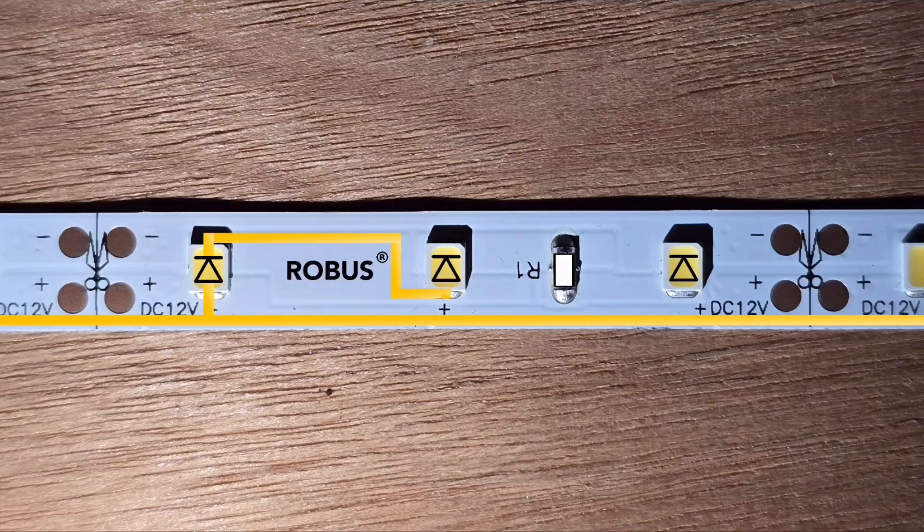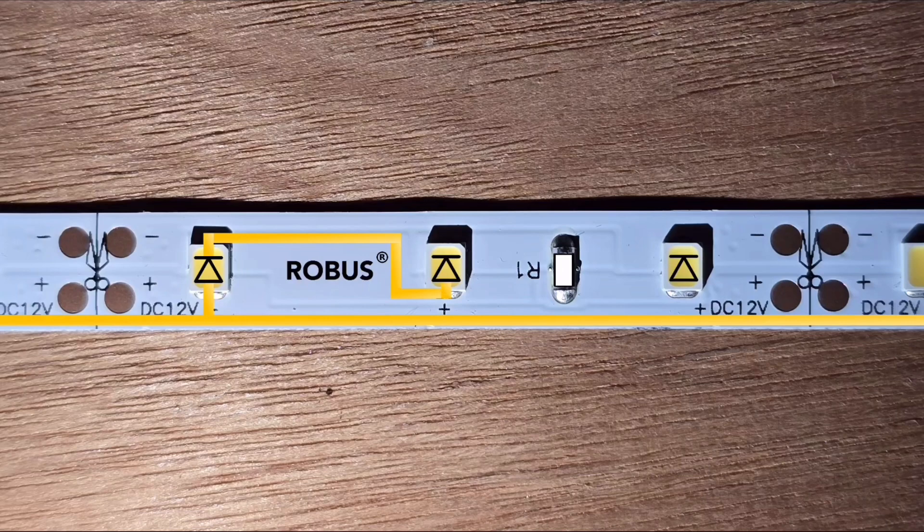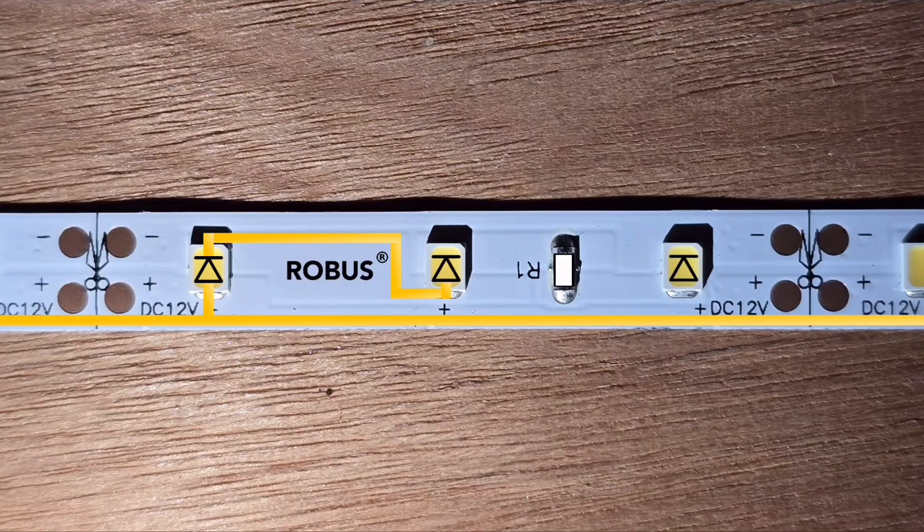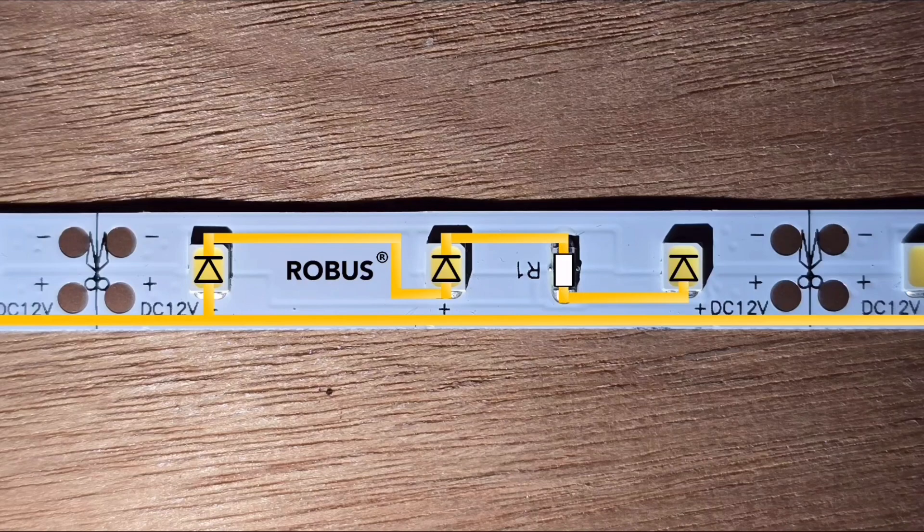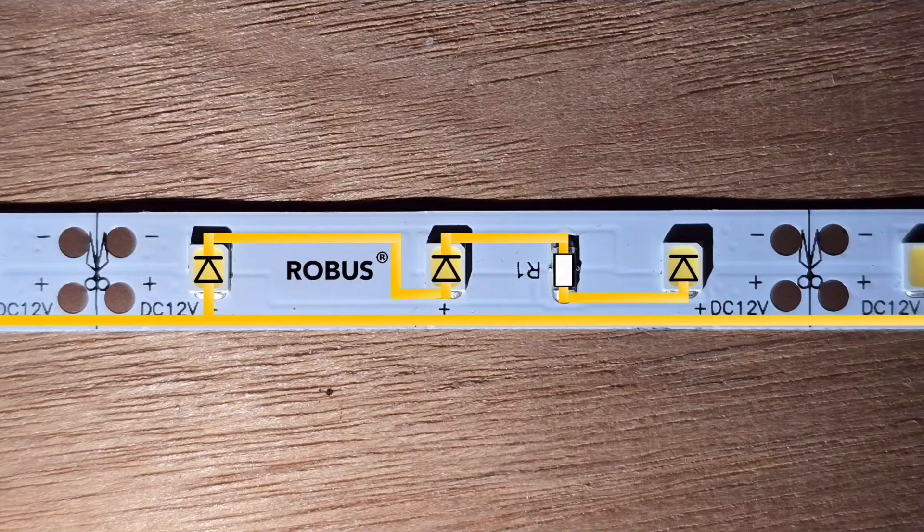Then the other side goes to a completely new piece of copper which connects to one side of the resistor. The other side of the resistor then connects to one side of the last LED in the strip and the other side of that goes to the negative rail, completing the little mini circuit.